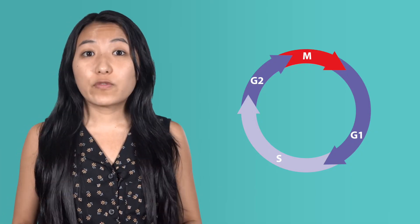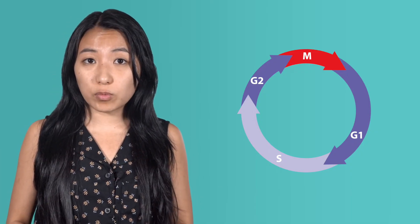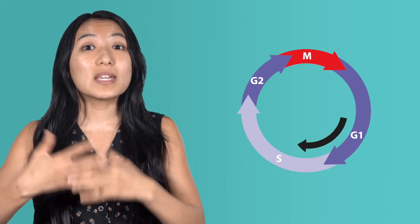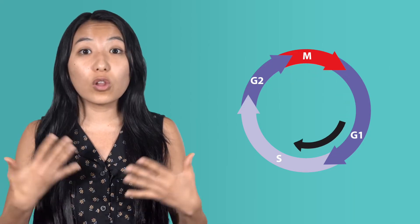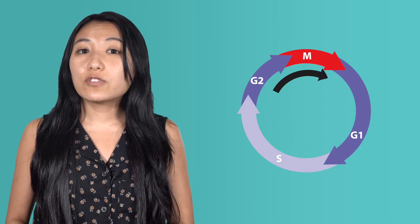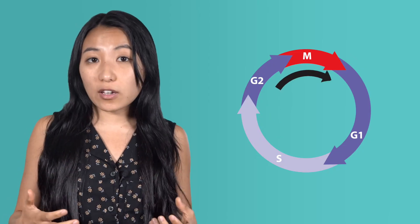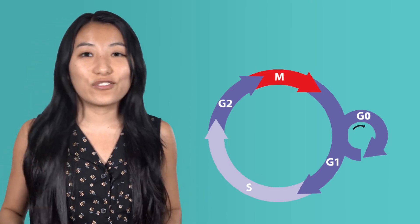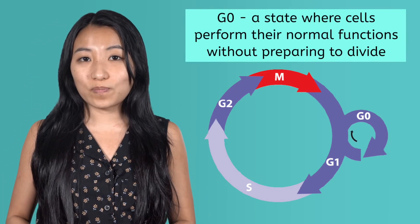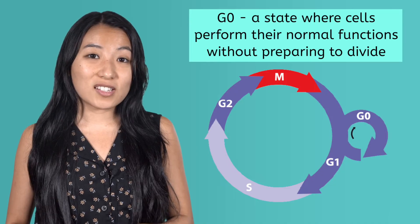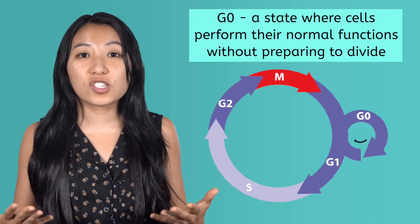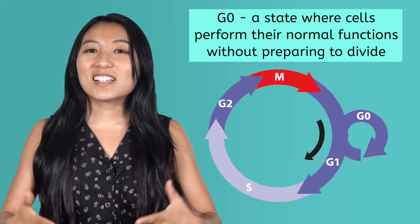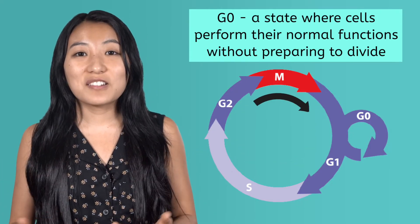Well, it depends. If you still need more cells to replace old ones, or you're just a growing teenager, these two new cells might immediately enter the cell cycle all over again to fill that need. However, if division is no longer required, these new cells will exit the cell cycle and hang out in a phase called G0. G0 is a state where cells perform their normal functions without preparing to divide, and from here they can easily enter the cell cycle again when needed.